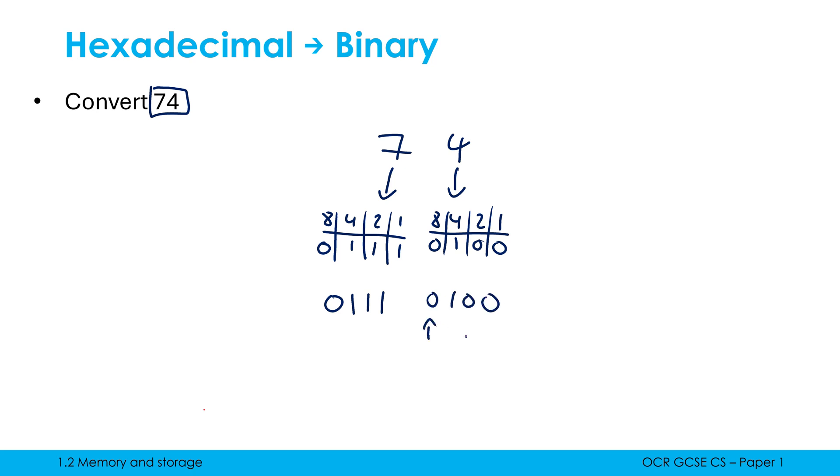These zeros are super duper important we keep because otherwise without them it messes up our place value. So what's the answer? Well I combine the two nibbles together so the answer would be 0 1 1 1 0 1 0 0. If I didn't write down this far left 0 not a problem at all but the other zeros are really really important.